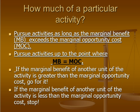Kind of broken down here now. How much should we do of a particular activity? We should pursue activities as long as the marginal benefit exceeds the marginal opportunity cost — so as long as we're benefiting more than the opportunity cost we have of doing other things. We should pursue things up to the point where marginal benefit equals marginal opportunity cost. If the marginal benefit of another unit of the activity is greater than the opportunity cost, we should continue to do it. If the opportunity cost is greater, we should stop.